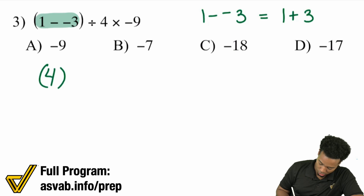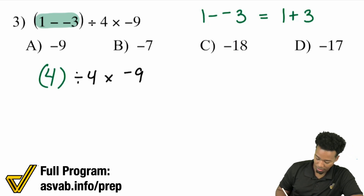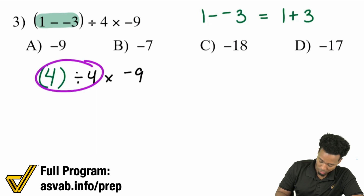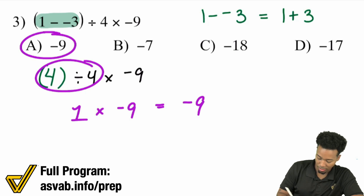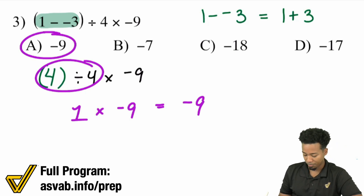So we have four divided by four times negative nine. Four divided by four becomes one, and one times negative nine becomes negative nine. Just like that.